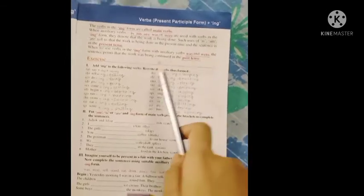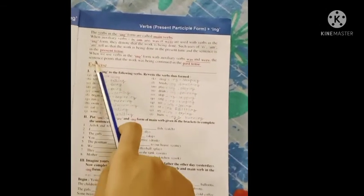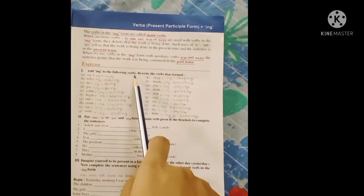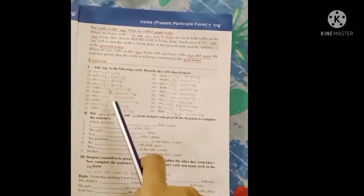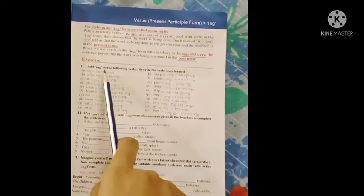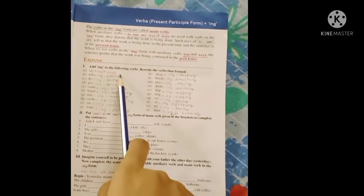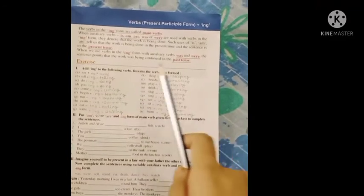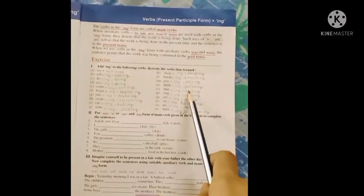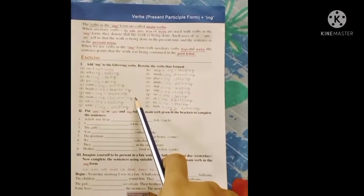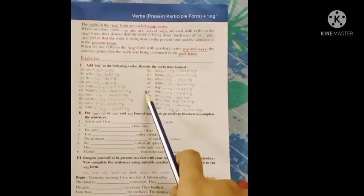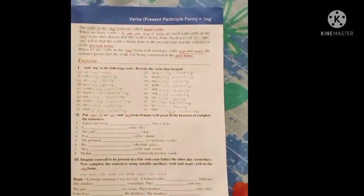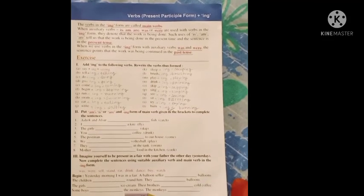Hope you got this topic. Come to this exercise, question number one: add ing to the following verbs and rewrite. So, say plus ing — saying; tell plus ing — telling; do plus ing — doing. Students, you have learned this before in the previous standard. Follow this and do it in your copy. Hope today's topic is clear. See you in the next class. Bye-bye, students.